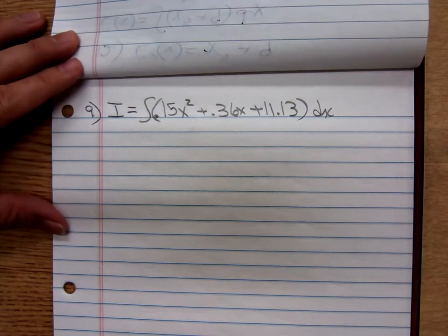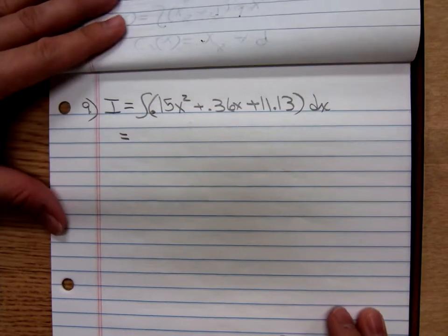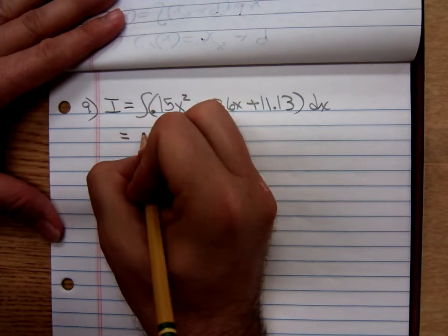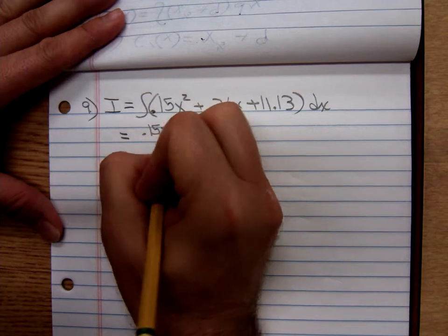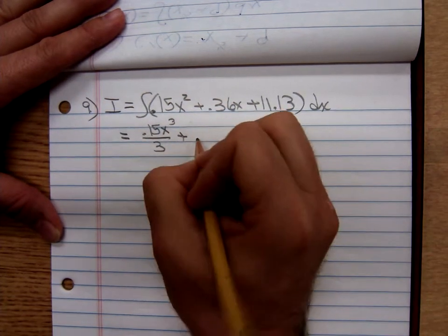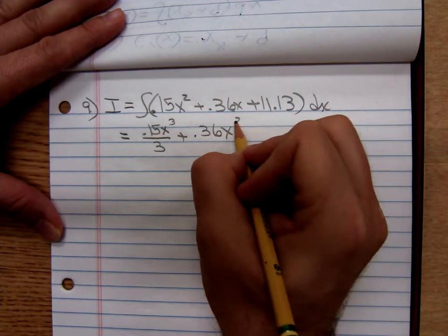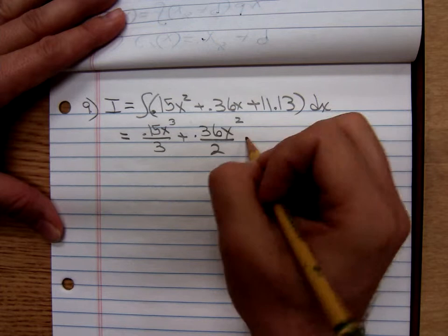Anti-differentiating that, using our anti-derivative rules, we're going to get, that'll be a 0.15x, add 1 to get a 3, divided by 3, plus 0.36, add 1 to get a 3, divided by 3, plus 0.36, add 1, so we get x squared divided by 2.